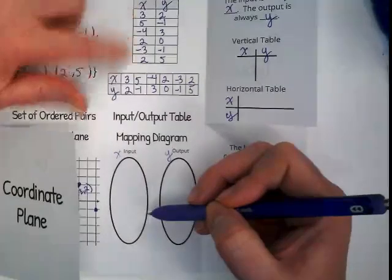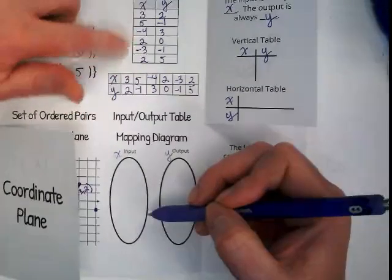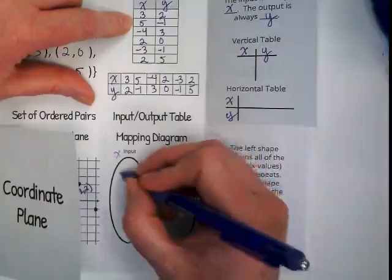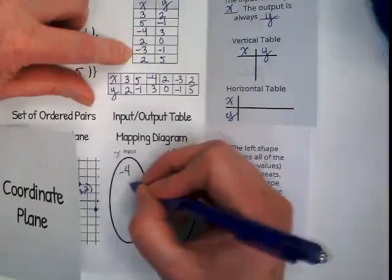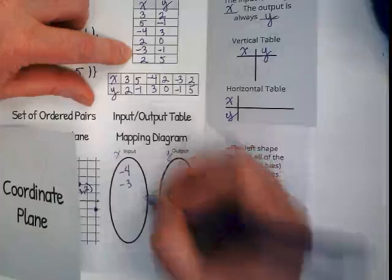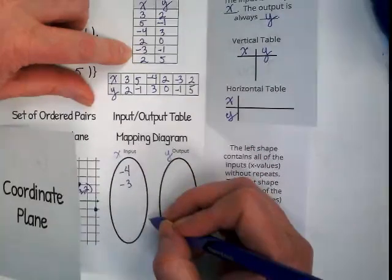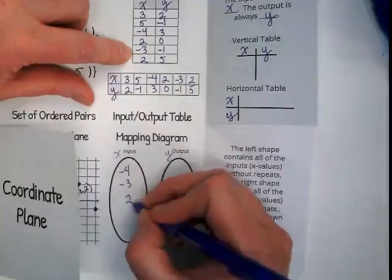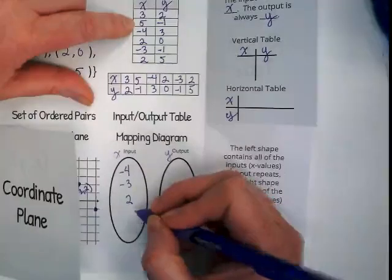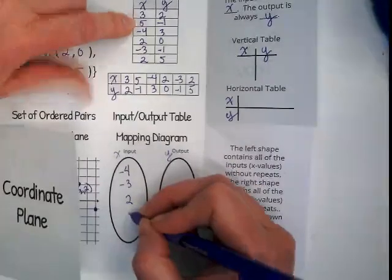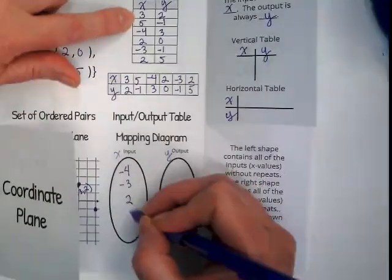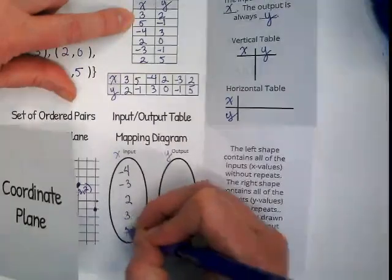What's the smallest number in this list? Negative four. Okay. And then negative three. What's next? But we only put it in here once. Once. And then three. And then five.